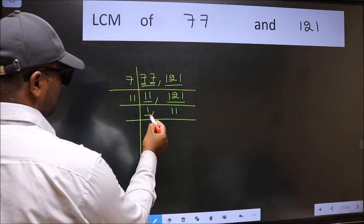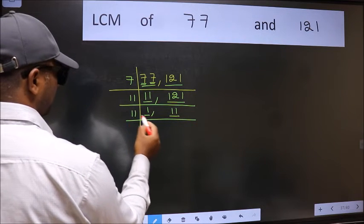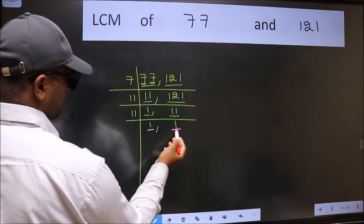Now we got 1 here. So focus on the next number 11. 11 is a prime number. So 11 times 1 is 11. So we got 1 in both the places.